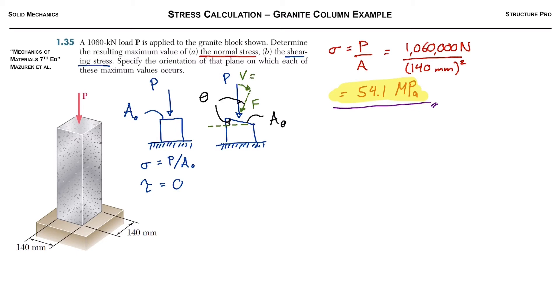Next we can solve for V and F using simple trigonometry. So V is going to be P sine theta. We know that if theta was zero, V should be zero, so that checks out. And F equals P cosine theta.